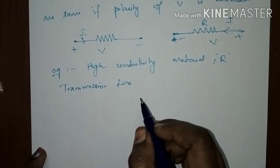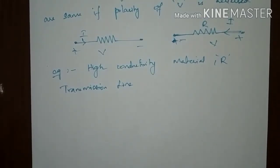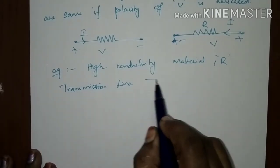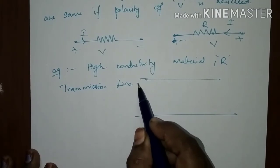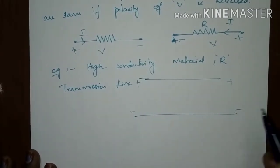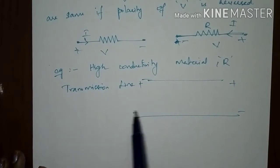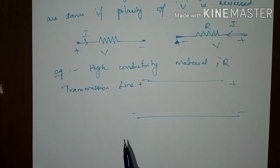Since the transmission line is symmetrical about either direction, if you interchange the voltage it is symmetrical about both sides. If you are reversing the sending-end voltage or receiving-end voltage, they are both symmetrical at both ends. So, transmission lines hold the property of bilateral elements.